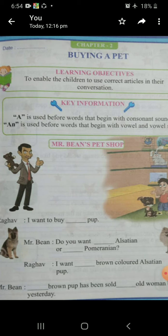See, Alsatian is given after the fill-in-the-blank, and it starts from A. A is a vowel, so we will write An. Jahaan vowel sound aata hai, wahan An aata hai. And Pomeranian starts from P, and P is a consonant, so we will write A. Mr. Bean, do you want an Alsatian or a Pomeranian? Done.